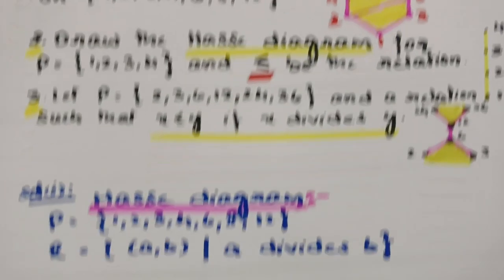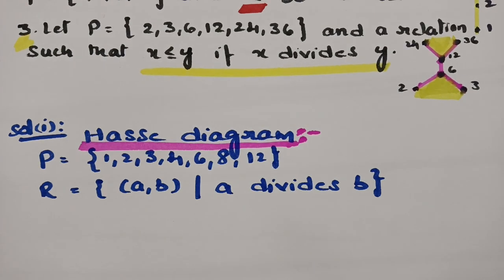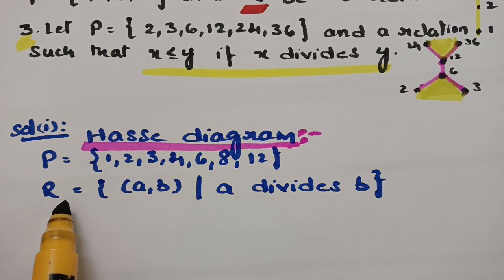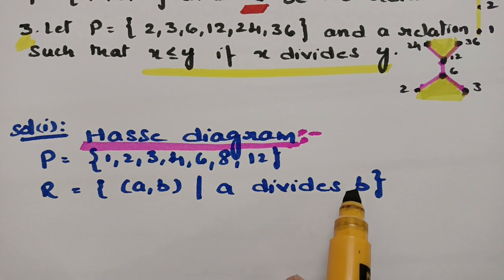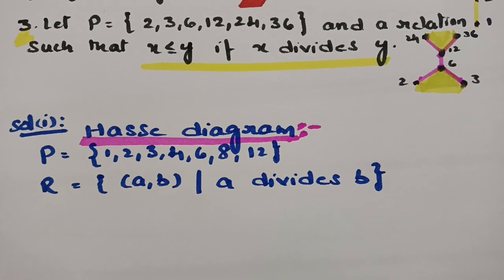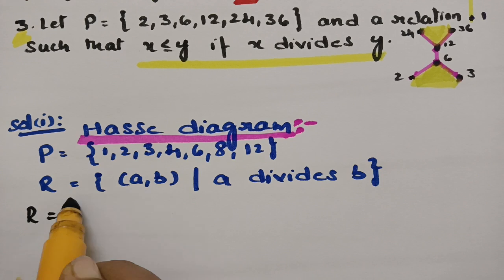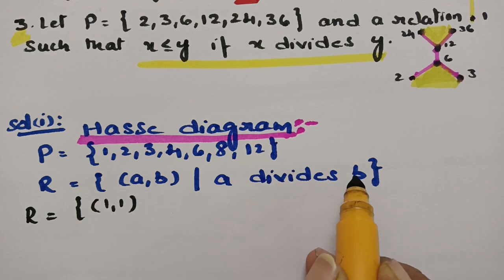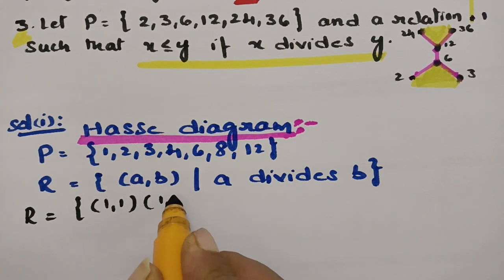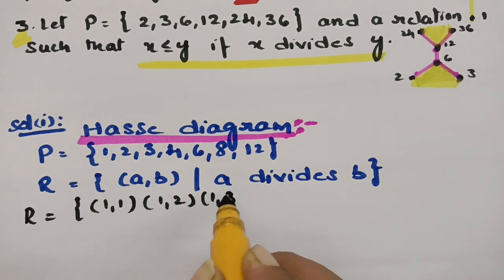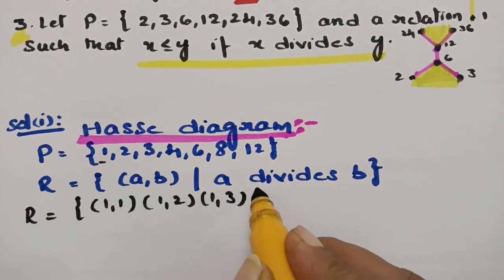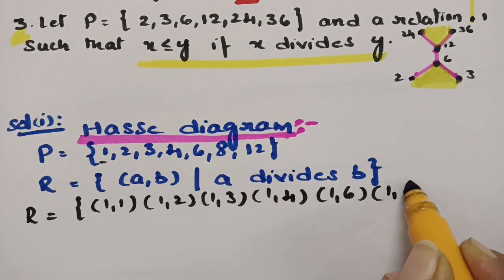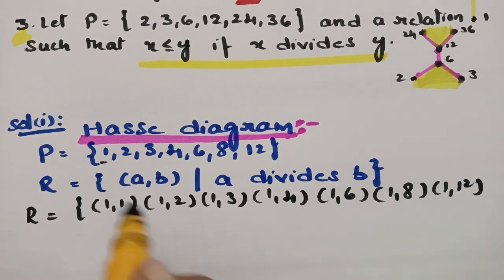For the first solution, the Hasse Diagram is drawn with P = {1, 2, 3, 4, 6, 8, 12} and the relation (A, B) such that A divides B. Starting with 1: 1 clearly divides 1, 1 divides 2, 1 divides 3, 1 divides 4, 1 divides 6, 1 divides 8, and 1 divides 12.